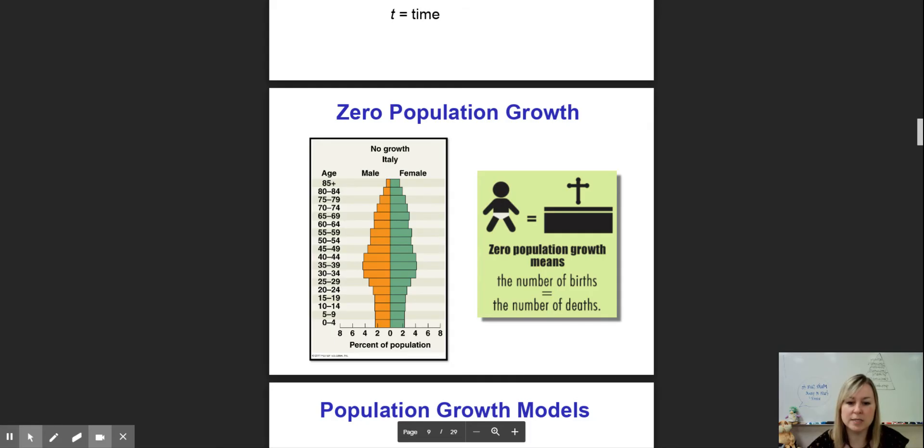These are our age structure diagrams. Zero population growth means that births equal deaths. This graphic, the age structure diagram shows Italy. They have high survivorship. The young people and reproductive age are doing well. As you age, you die. But it seems to be equal. They're having just as many babies born as they are having old people die. The graphic looks confusing—baby equals death—but what that means is births equals deaths, so the population number stays the same.